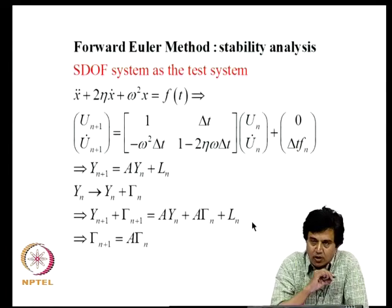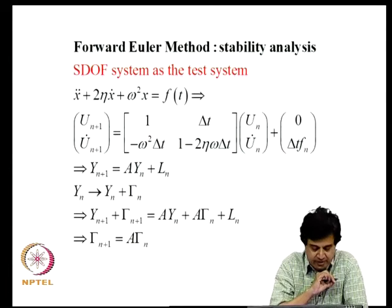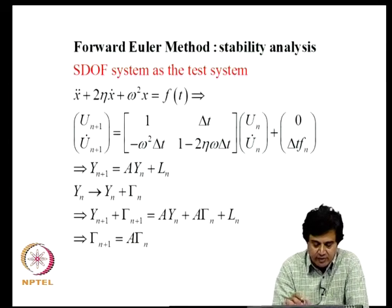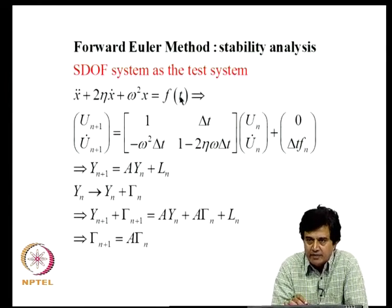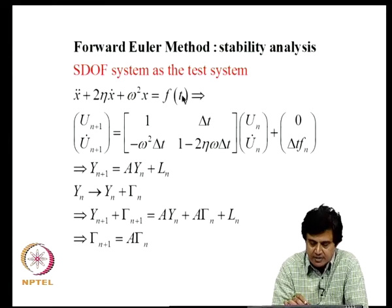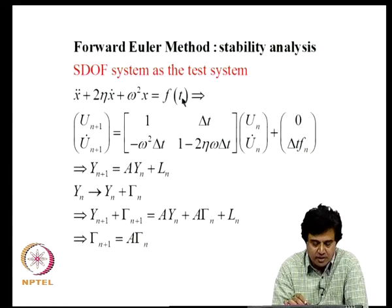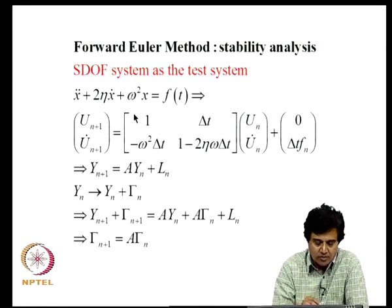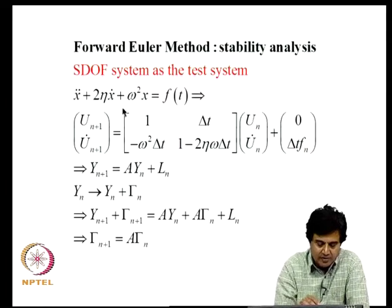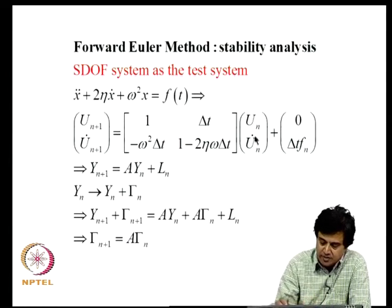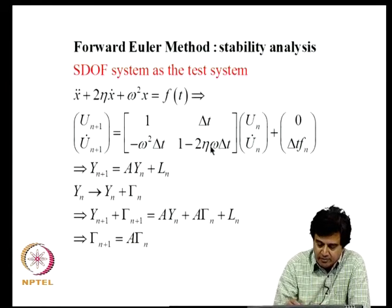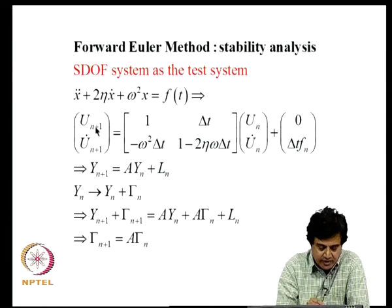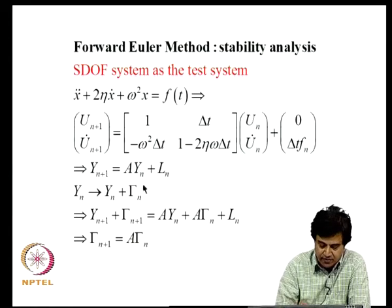We were discussing how errors grow as time marching takes place. To illustrate that, we considered a single degree-of-freedom system driven by F. Even for a multi-degree-of-freedom system, after normal mode analysis and transformation to natural coordinates, the equations of motion become a set of single-DOF systems. So to understand error growth, we focus on a single DOF system. The equation based on the forward difference scheme for this oscillator can be put in matrix form: Y_{N+1} = A·Y_N + L_N, where Y_N is a 2×1 column vector of U_{N+1} and U̇_{N+1}, and A is the amplification matrix.